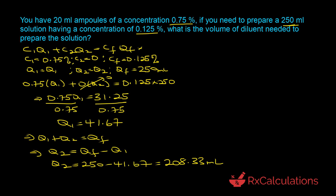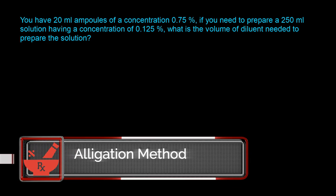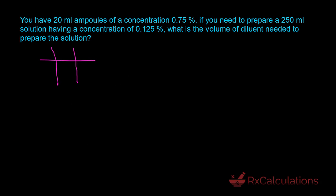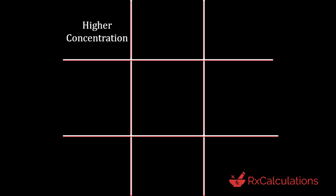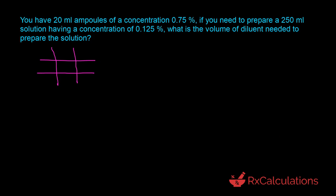You can also solve this question using the allegation method. We start with two vertical lines and two horizontal lines. The higher concentration goes to the top left, the lower concentration goes to the bottom left, and the desired concentration goes in the middle. If you need a more exhaustive tutorial on allegation calculations, I'll put links in the description and cards. For this question, the higher concentration is 0.75%, the lower concentration is the diluent at 0%, and the desired is 0.125%.